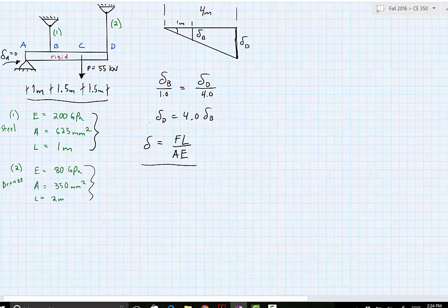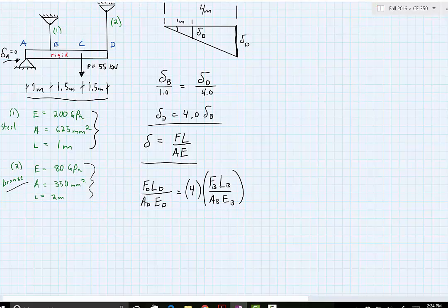So we can then use this relationship and put it into this formula that we created. So we could say the force at D multiplied to the length of D divided by the area of D multiplied to the Young's modulus of D. And when I say D I'm using that interchangeably of the cable acting at point D which is the bronze, the cable 2. And this is going to be equal to 4 multiplied to the force at B, the length of B divided by the area of B, Young's modulus of B. And again I'm using B as in relation to cable 1, the deflection of cable 1.